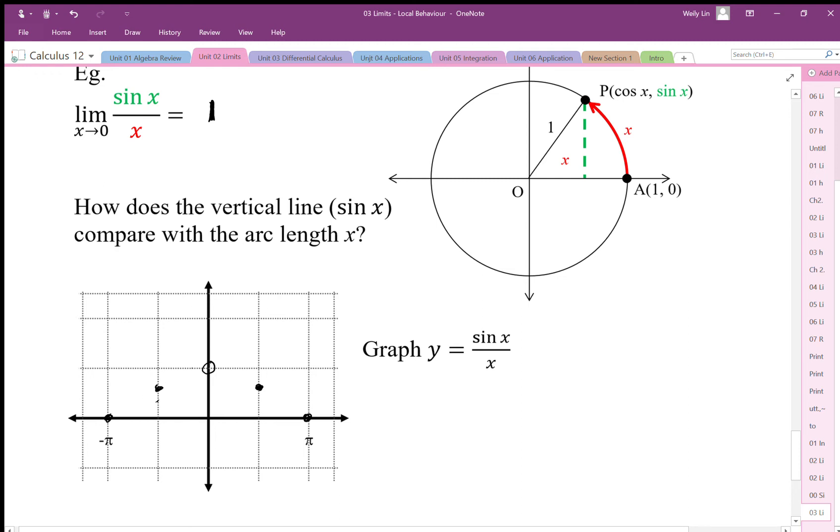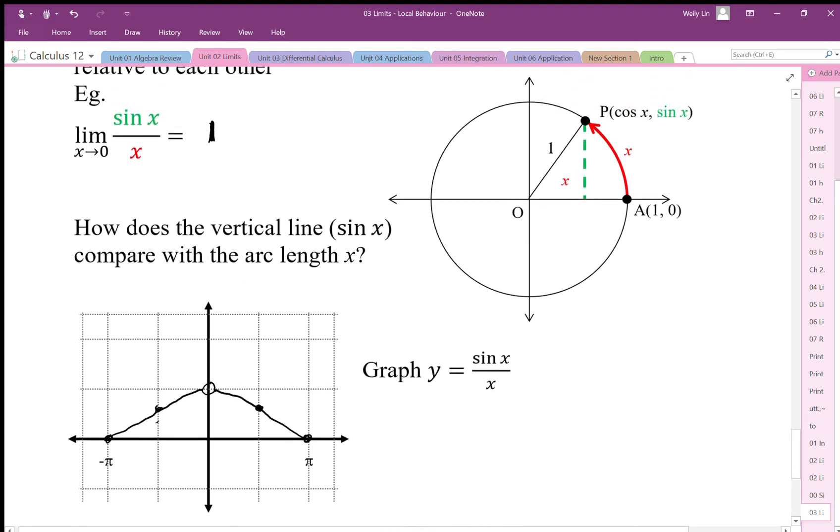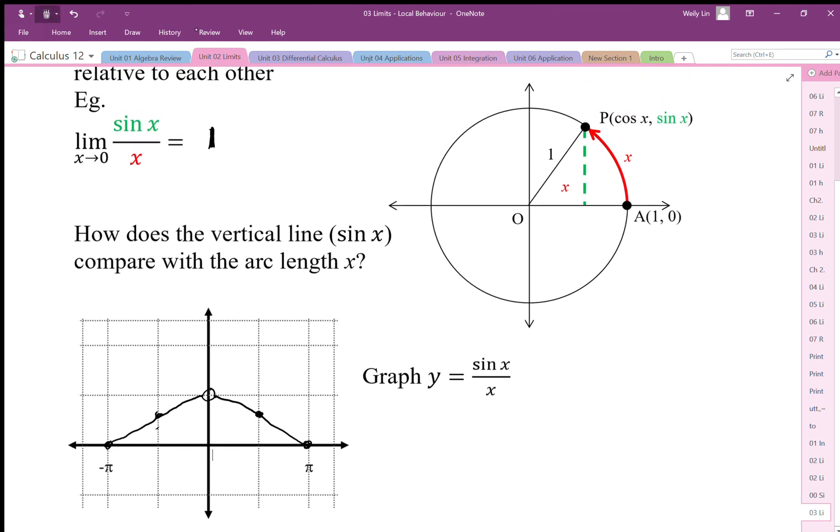This graph is going to come up and then it's going to approach one as we go to zero. This is our sine x over x ratio. Geometrically we can define it like this—if we graph it, it's going to look like this. This is actually a very important limit, and we want to know this limit as an identity.